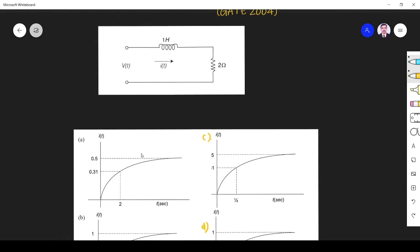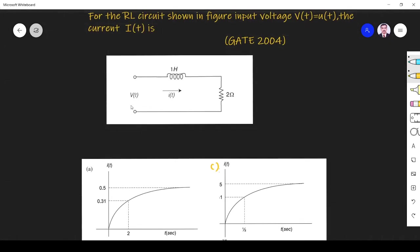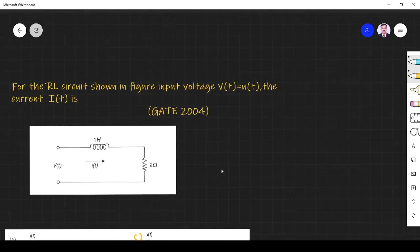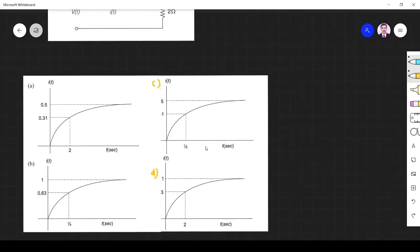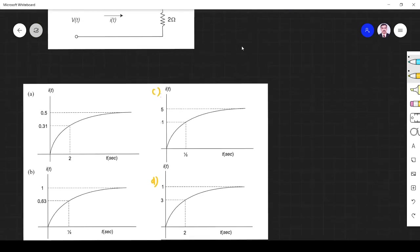So current I(t), they have given only plots. So here they have given V(t). They have given four options: option A, B, C, D. So I(t) is given as a plot, so we have to find it.